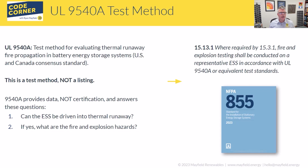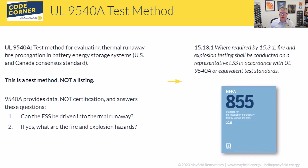The codes say the 9540A data shall be made available to the AHJs — Authorities Having Jurisdiction — for their evaluation and acceptance of how you're going to install the system, if it's different from the standard fire code requirements. In NFPA 855, section 15.13.1 for residential systems, and similar language for commercial systems, the testing conducted within UL 9540A requirements can supersede the general installation requirements.